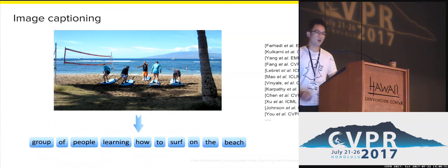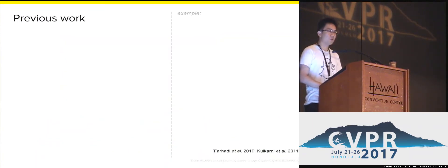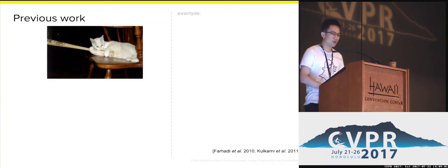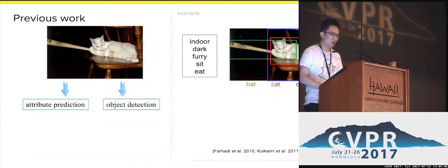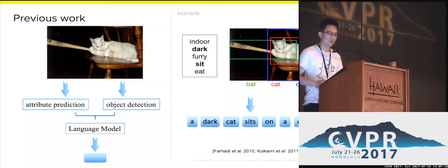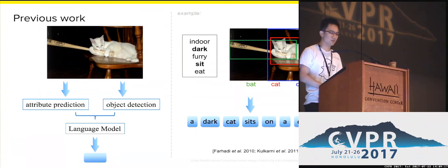Recently, there are many related works on this problem. Previous works can be categorized into two groups. Before the recent era of deep learning, the first group of methods tried to handle this problem by first running some intermediate tasks such as attribute prediction and object detection, and then using a language model to generate a sentence. This type of method is limited because it depends on intermediate tasks, which makes them unstable.